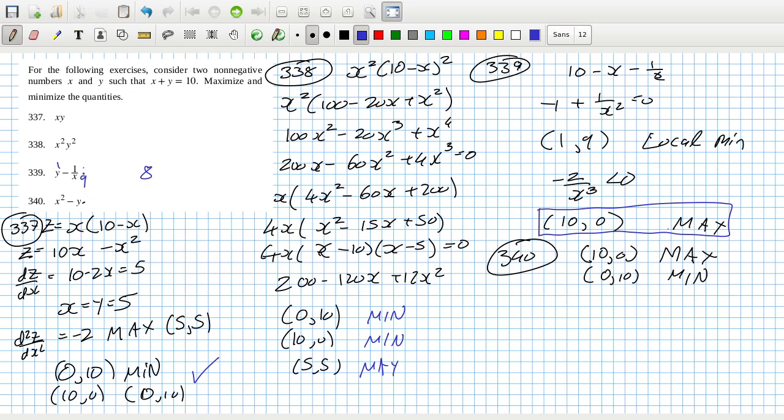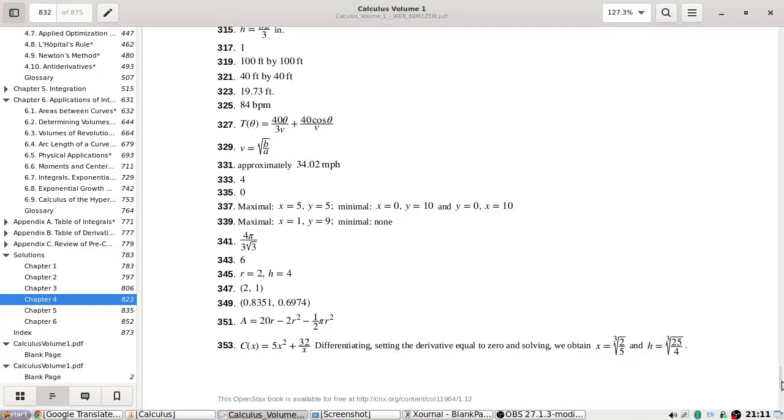That's 1 minus 1/9, so that surely must be wrong. 10, 0 is the max. And 1, 9. No, that can't be the max.